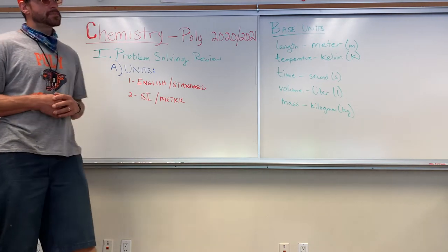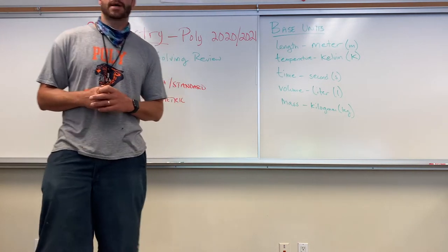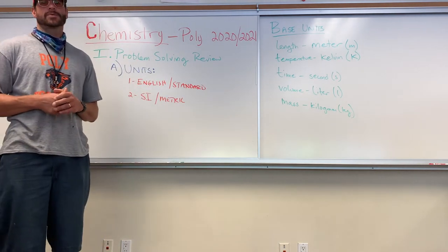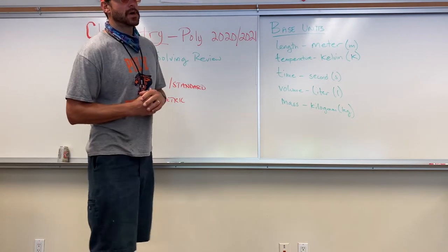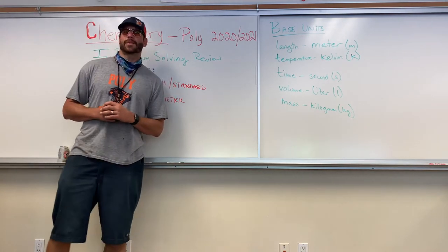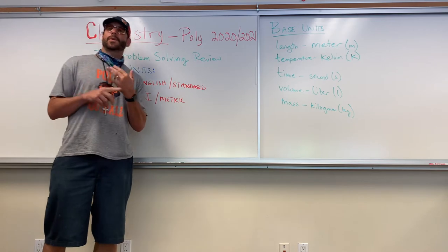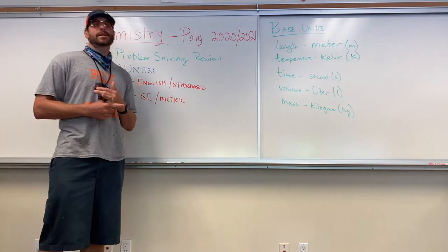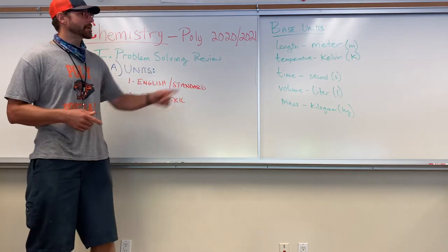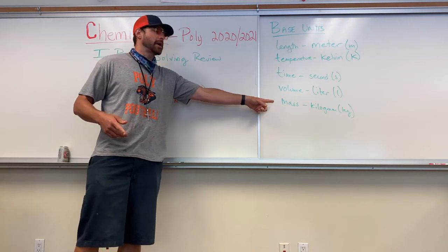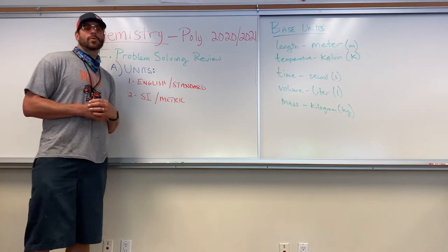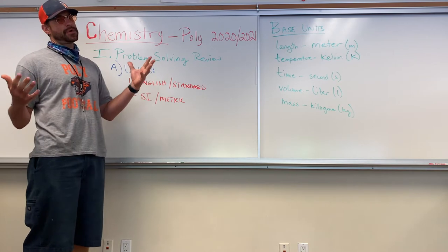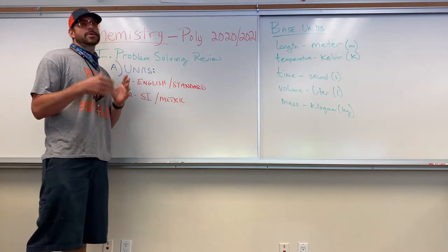One of the first things we think about in science is measurement. When we're measuring different things, there are two words you'll hear often when making observations: quantitative and qualitative. Quantitative things are things you can directly measure — length, temperature, time, volume, mass — we can put a number to them. I'm six foot three inches tall; that's a quantitative measurement.